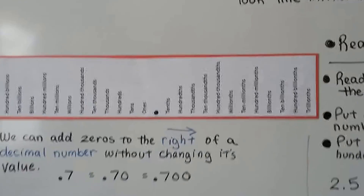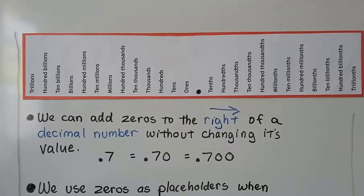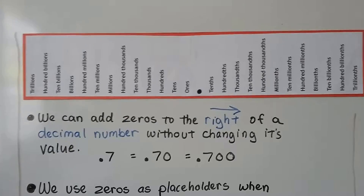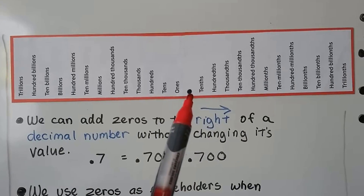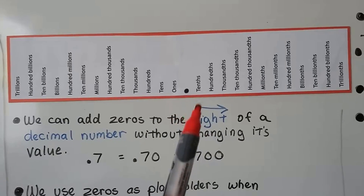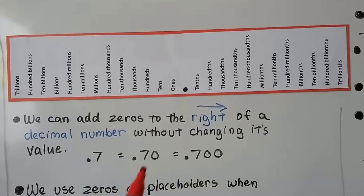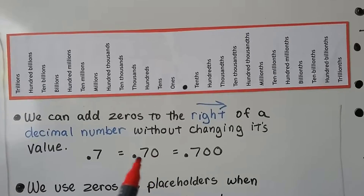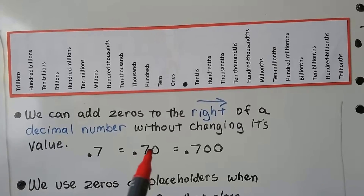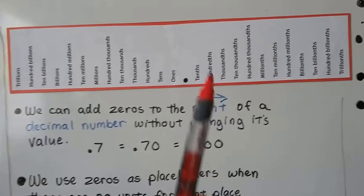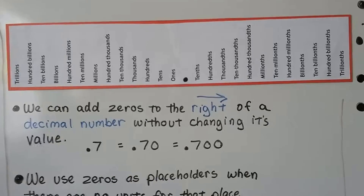We can add zeros to the right of a decimal number without changing its value. If we have a decimal point and a seven, the seven is in the tenths place. We could put a zero after it — it's still seven tenths, but we would say seventy hundredths. And it's still equal to seven tenths.